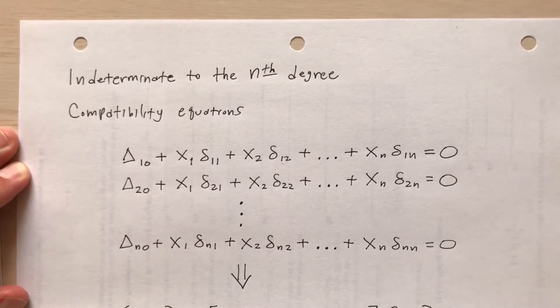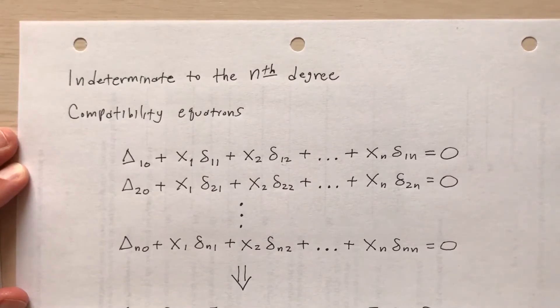So I've got my compatibility equations here. The deltas represent the real deflections: delta sub 1,0, delta sub 2,0, etc.